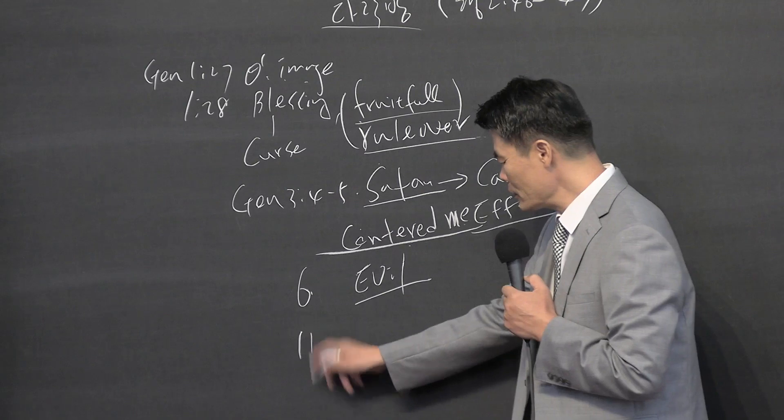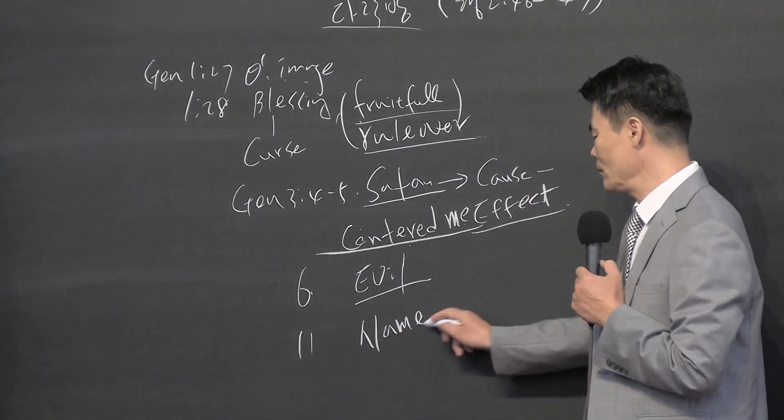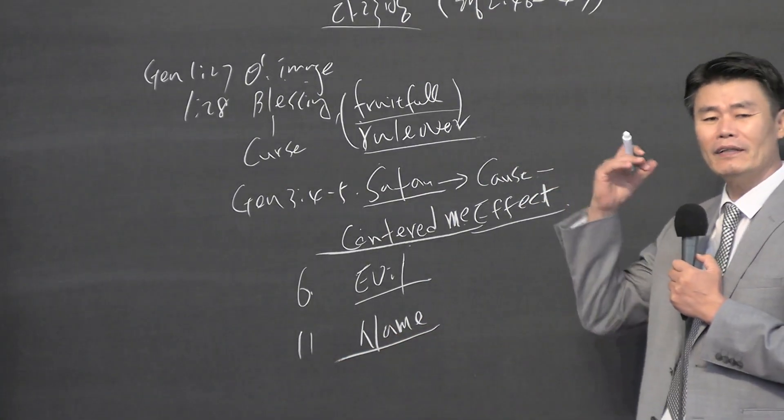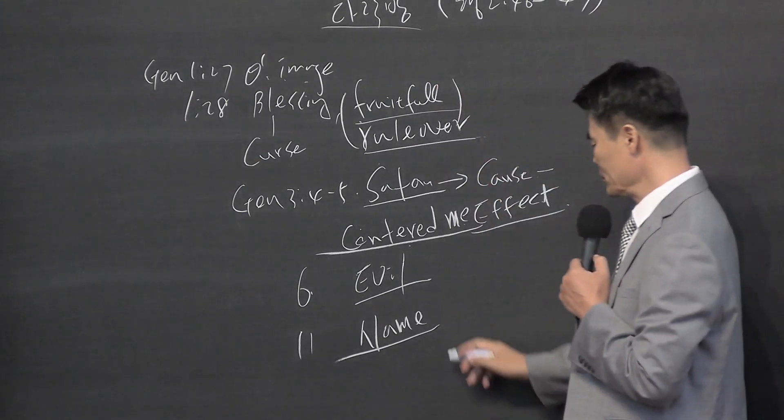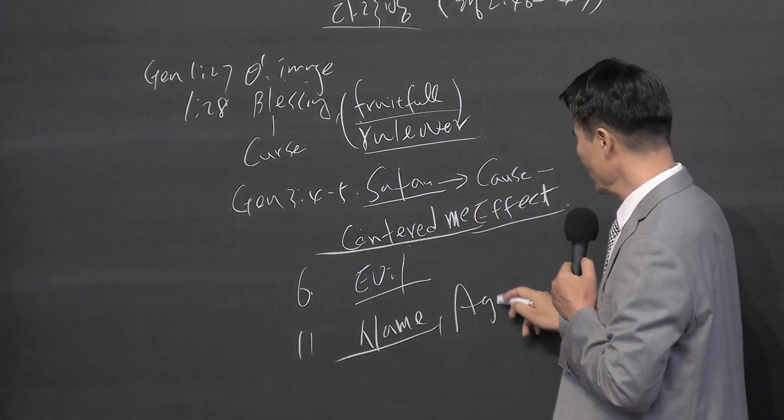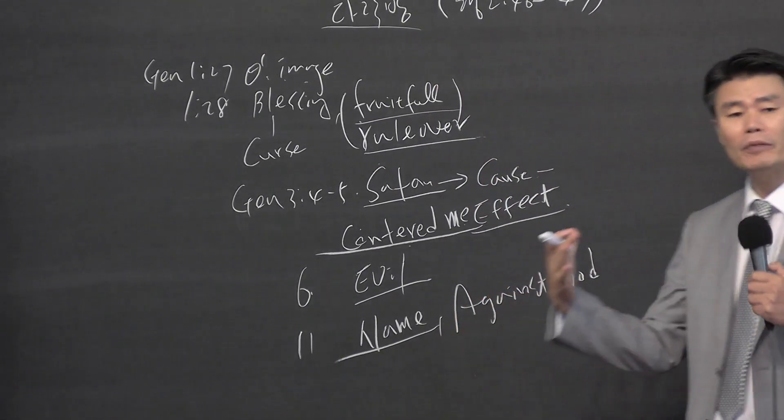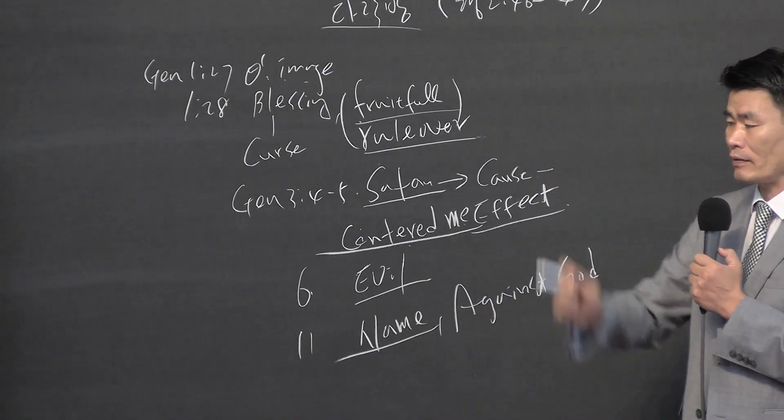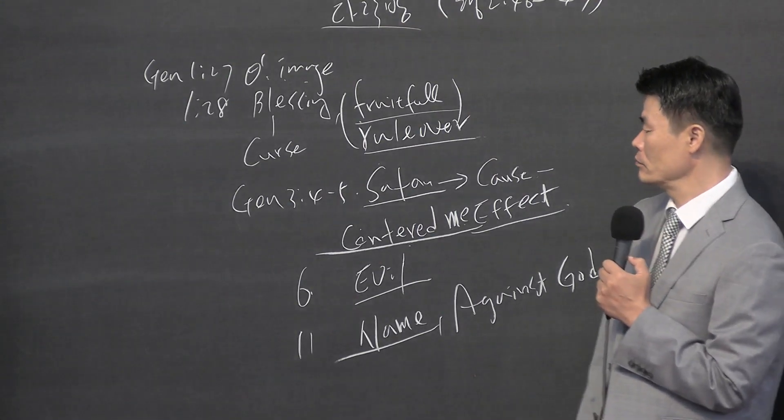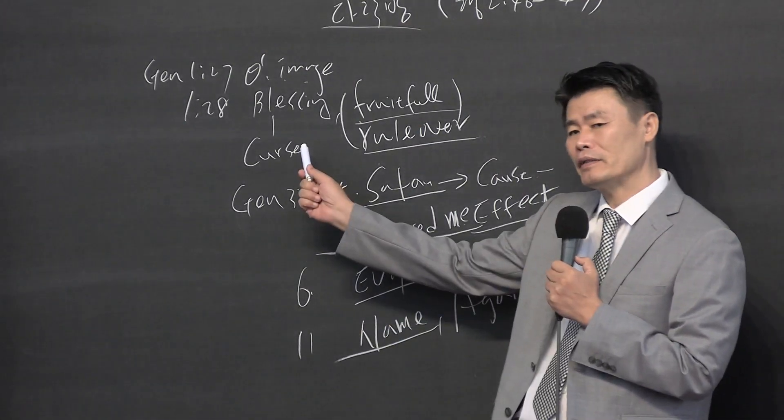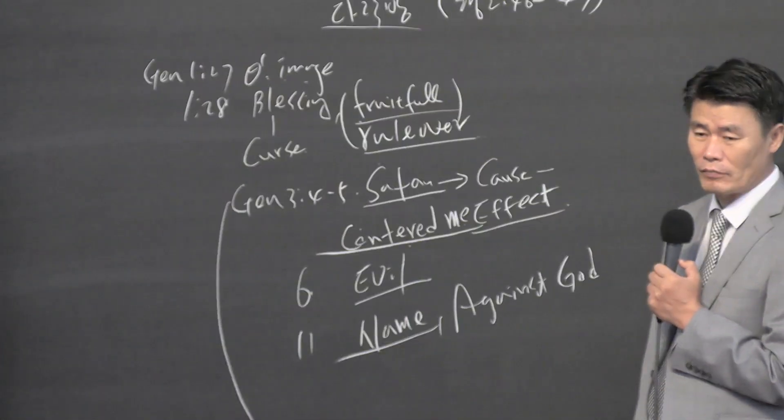Genesis 11 states for our name, for our glory. So our glory and power reaches the heavens and will not be scattered around the earth. Mankind just started to gather together to glorify themselves, but God saw it as something against Him. This is the form of mankind that is separated from God.